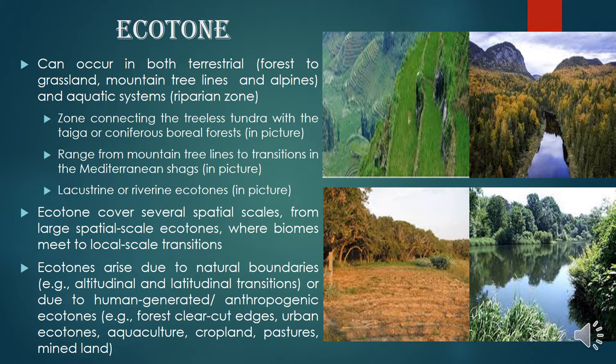Ecotones can be between two terrestrial ecosystems. For example, between a high mountain where temperature is much lower and we see only a very small amount of vegetation, and below that where we see coniferous vegetation — this is the tree line ecotone. The tree line is the ecotone between the altitudinal tundra region of the high mountain and the coniferous region below. This tree line region is the ecotone between two different ecosystems.